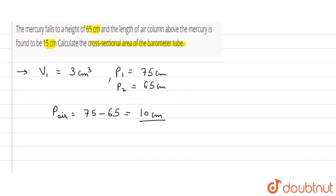So now the length of air column is given to us. The length of air column is 15 centimeters. So now, if A square centimeters is the area of cross-section of the tube...